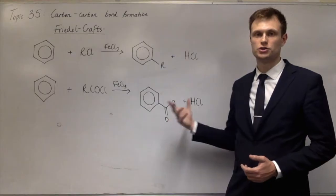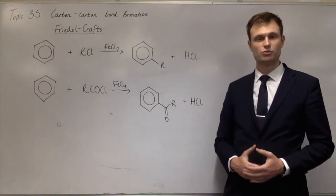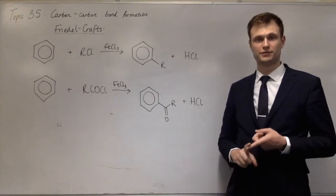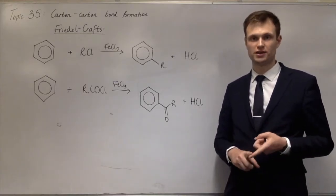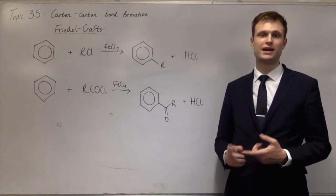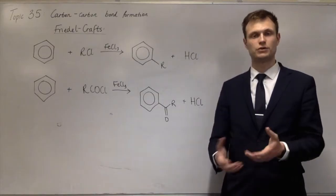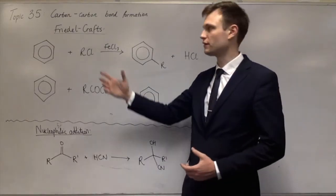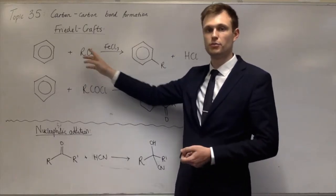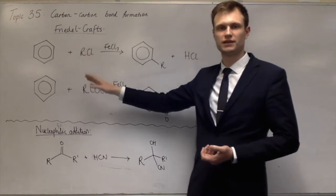The other reaction we've seen before is the addition of hydrogen cyanide to aldehydes and ketones. You can make a hydroxynitrile from the addition of HCN to an aldehyde or a ketone. In the Friedel-Crafts reaction, the halogen carrier pulls the halide from the haloalkane to give R⁺, which is an electrophilic substitution — the R⁺ is substituted onto the ring in place of a hydrogen.